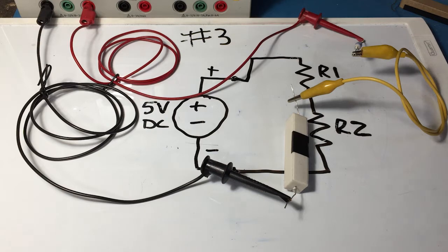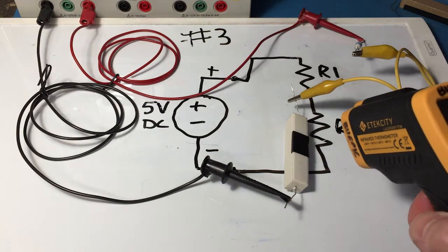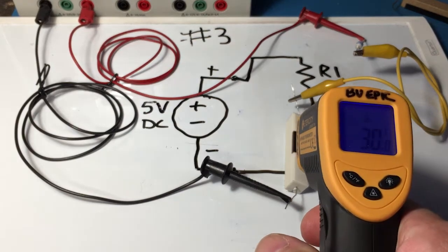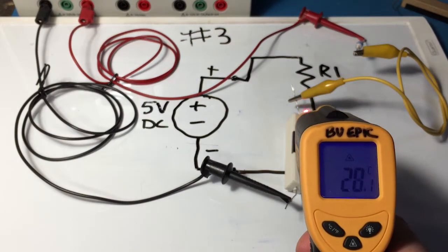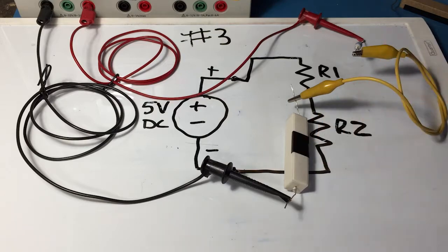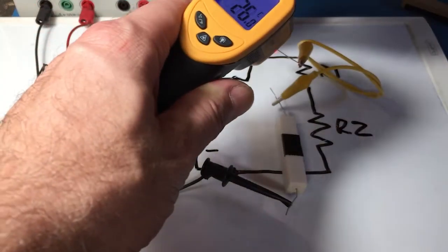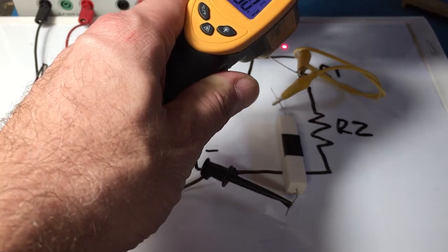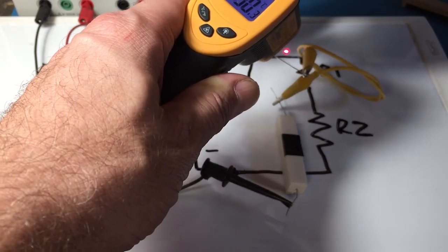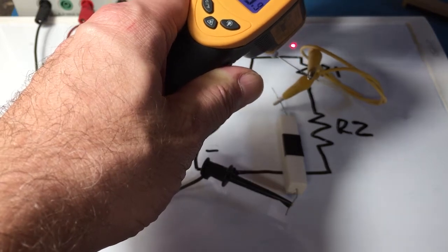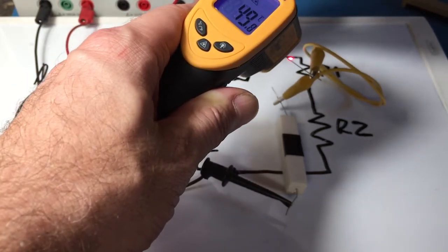We could take out our infrared thermometer again, make some measurements and we're getting about 30 degrees on R2. R1 is going to probably be difficult to measure because it's small. Oh we got 45 degrees on there. I saw a maximum of 45 degrees.